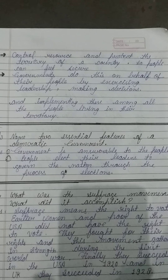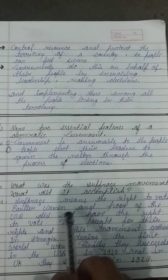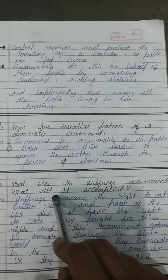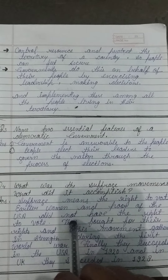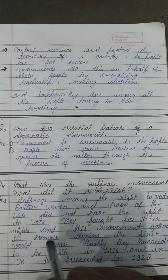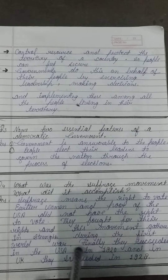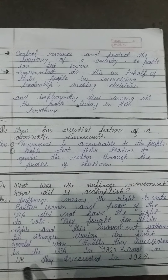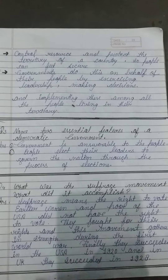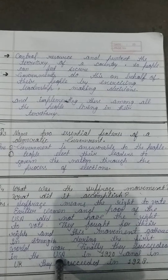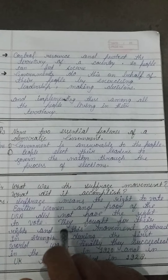Now your next question: What was the suffrage movement? What did it accomplish? Suffrage means the right to vote. Earlier, women and the poor of the USA did not have the right to vote. USA mein pehle jo garib log the aur women thin, unko voting right nahi diya gaya tha. They fought for their rights and this movement gathered strength during the First World War. Aur yeh jo movement thi, First World War mein kaafi power mein aa gayi. Log apna right chahte the — ladies aur poor log chahte the ki unhe bhi voting mein participate karne dena chahiye. Finally, they succeeded in the USA in 1920 and in the UK in 1928.